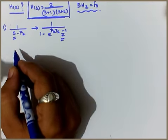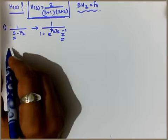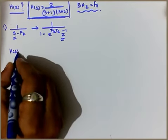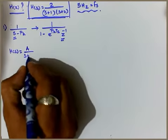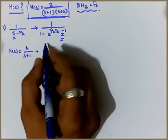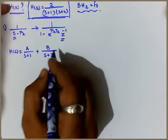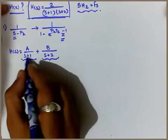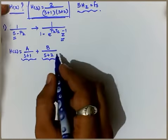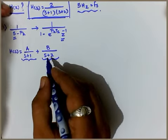For the partial fraction expansion of H(s), we write: H(s) = A/(s+1) + B/(s+2), where A and B are the two unknown values. The poles for this expression are at s = −1 and s = −2.